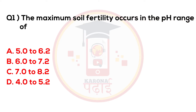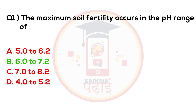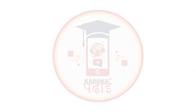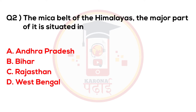The maximum solid fertility occurs in the pH range of 6 to 7.2. The mica belt of the Himalayas — the major part of it is situated in Bihar.